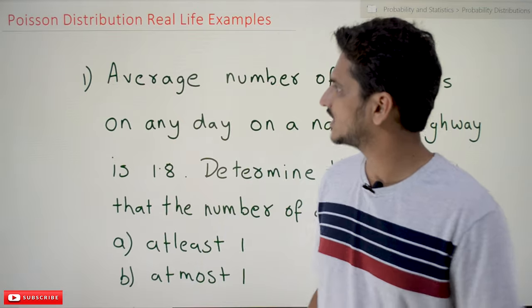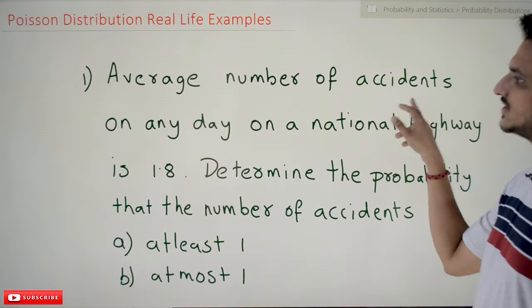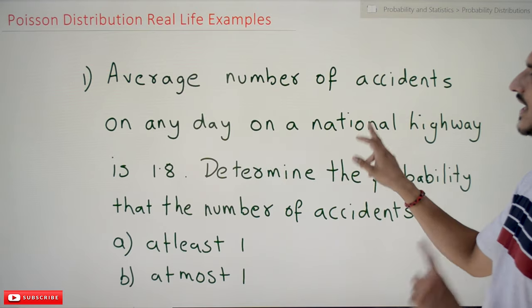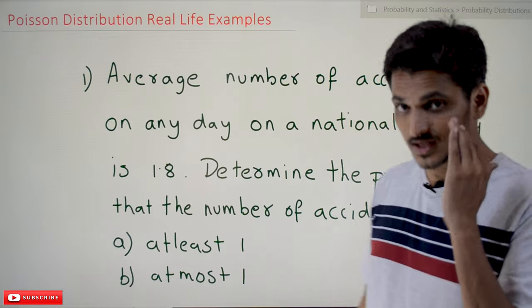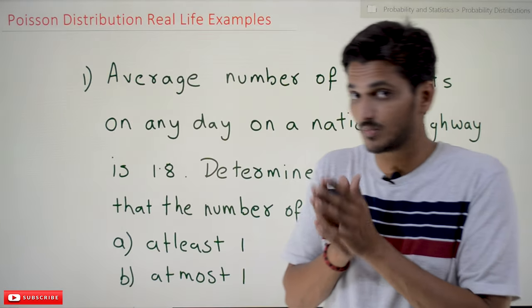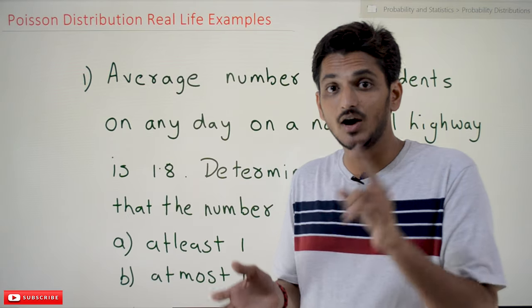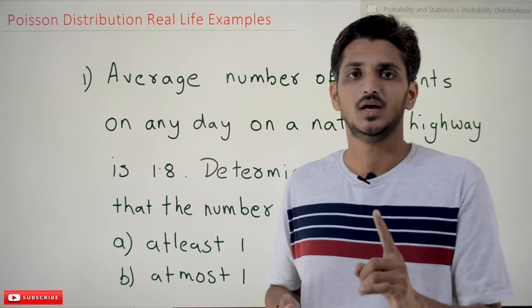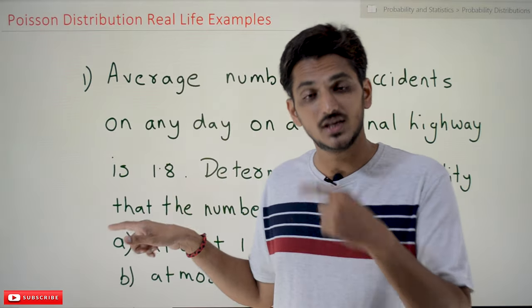Coming to today's class, our first example says: Average number of accidents on any day on a national highway is 1.8. See, you have to understand they have given the average number of 1.8 per day, means they have given the lambda value. In most real-time examples we can give only lambda value.